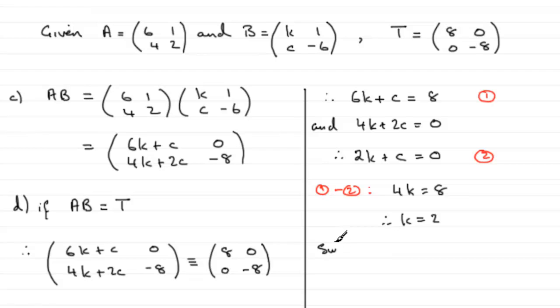If we just sub this back into equation 2, substituting 2, we've got that 2 multiplied by the 2 plus C equals 0. 4 plus C equals 0, that means that C must equal minus 4.